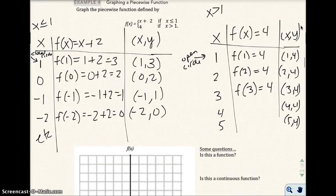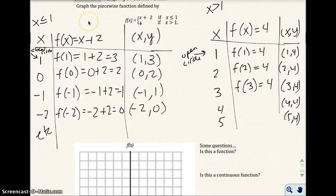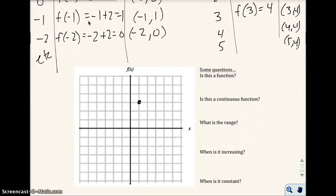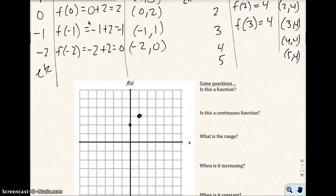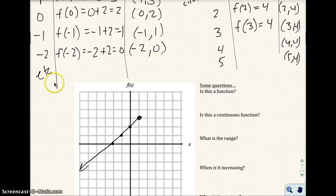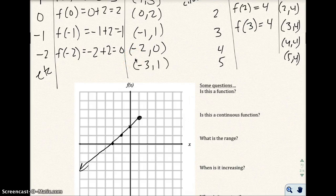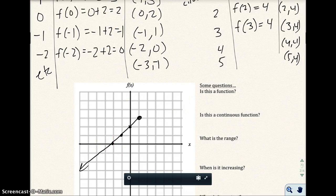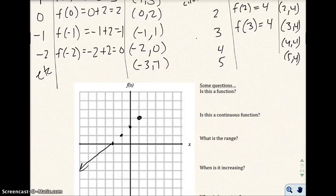I'm going to graph this. I'll do the first function here. I have (1, 3), which is right there, and it's a closed circle. Then (0, 2), (negative 1, 1), (negative 2, 0), et cetera. This is going to be this line right here. Notice I put an arrow on this end because it's going to go on forever. If I pick negative 3, then I would have negative 3 plus 2, which would be negative 1, so (negative 3, negative 1) would be right there. So I'll just extend my line there.